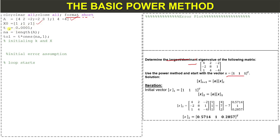Next we have the tolerance, which is the allowable error in our solution, equal to 0.001. Next I have used the length command to check the size of matrix A, because I want to generate a column vector for the tolerance.